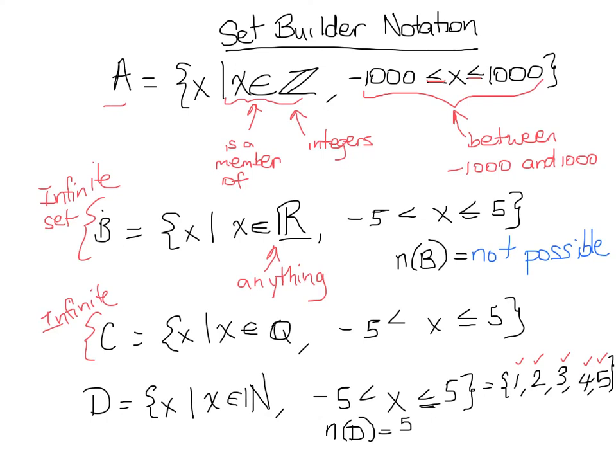So just to recap, the difference between an infinite set and a finite set. An infinite set such as set B and set C cannot be listed. You cannot give the number of elements in these sets because they are infinite. Whereas a finite set can be listed. The number of elements can be given and they can be listed.